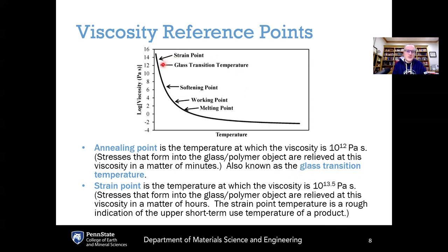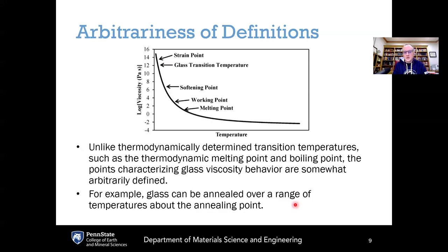Continuing to cool, the final viscosity reference point is the strain point, the temperature at which the viscosity is 10 to the 13.5 pascal seconds. This is where stresses will be relieved on the order of hours instead of minutes. The strain point is also a rough indication of the upper use temperature for short-term use of a product. If you heat a glass or polymer above its strain point, it will deform on a typical use timescale. As long as you keep it below the strain point, you should generally be okay.